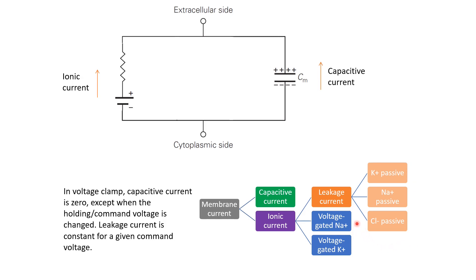On the other hand, voltage-gated ion channels can have conductances that change over time even when the membrane potential is fixed at a particular value. Because these conductances change over time, the current through these channels can also change over time. So if we measure the compensatory current in a voltage clamp experiment and see a component that is changing over time, we know it is not due to capacitive or leakage currents but must be through some active conductances.